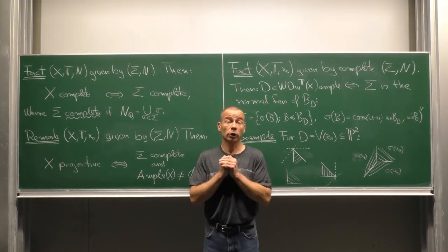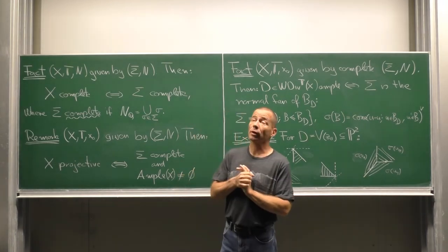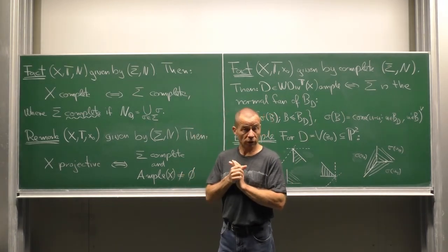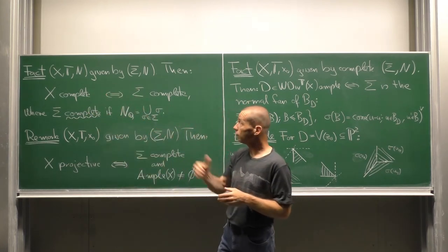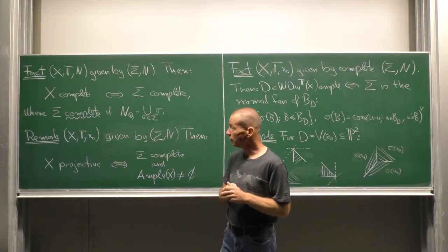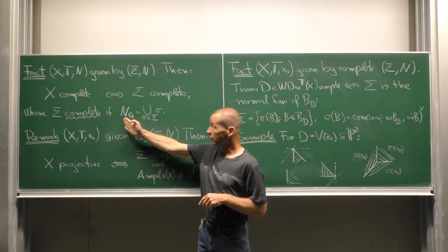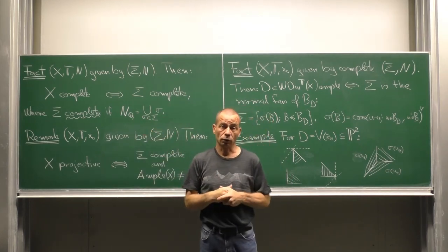We discuss a bit projectivity of toric varieties. First, a toric variety arising from a fan is complete if and only if the fan is complete. The latter means that the space N in Q is covered by all the cones of the fan.